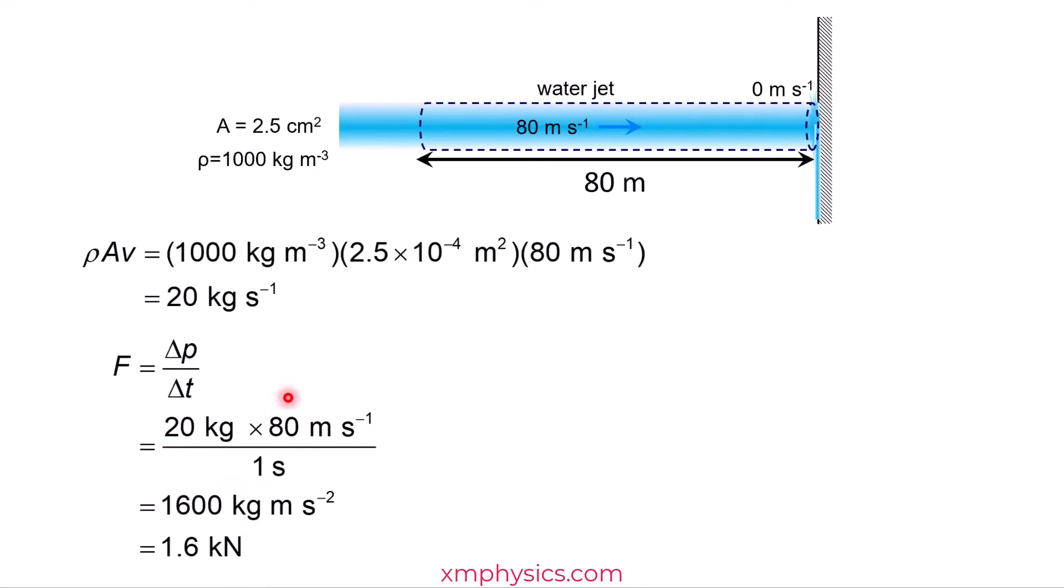So again, technically, this is the force exerted by the wall on the water jet. By Newton's third law, we know that the water jet is also exerting an impact force of 1.6 kilonewtons on the wall.